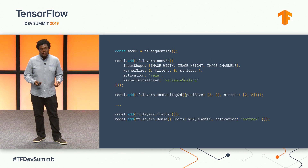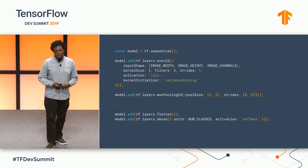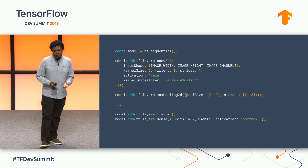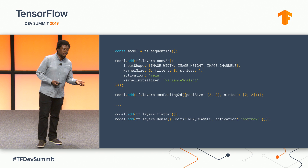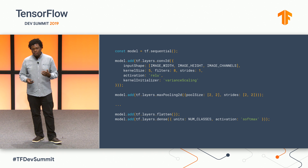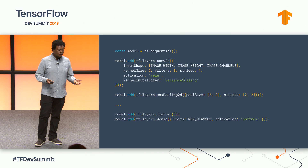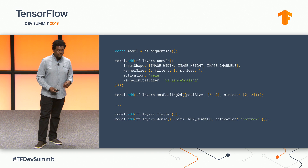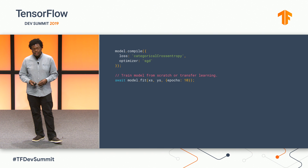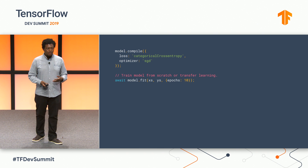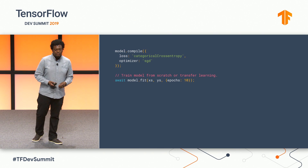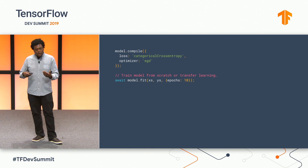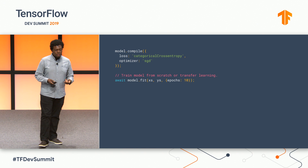This is what creating a convolutional model for a classification task looks like in JavaScript. It's very similar to Keras code in Python. We start by instantiating a model, add our convolutional layers, and finish the model definition by adding a flatten operation and a dense layer with a number of output classes. Similar to Python, we use model.compile to get it ready for training, specifying our loss function and optimizer. model.fit is the function that drives the train loop, and in JavaScript it's an async function, so we await the result.